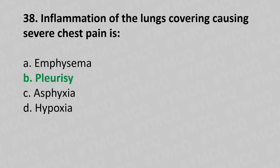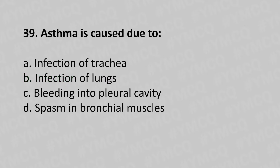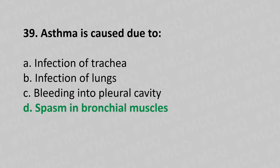Moving to question number 39. Asthma is caused due to. Option A: Infection of the trachea. Option B: Infection of the lungs. Option C: Bleeding into the pleural cavity. Option D: Spasm in the bronchial muscle. And the answer is Option D, spasm in the bronchial muscle.